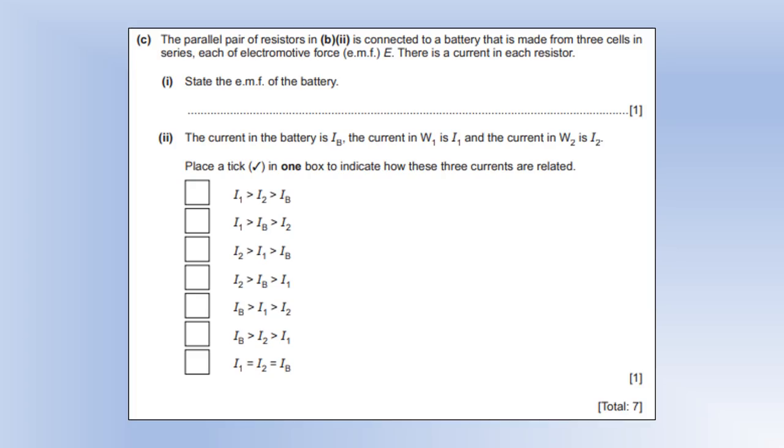So the pair of resistors is connected to a battery made from three cells. And they're in series with each other. And it's implied from this, I think they're in the same direction. Each of them has an EMF E. And there's a current going through each resistor. State the EMF of the battery. Well, if they're in series and in the same direction, we just add them together. So we get 3E.